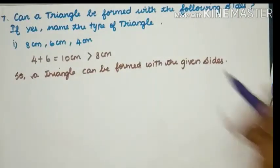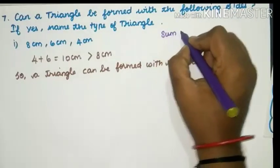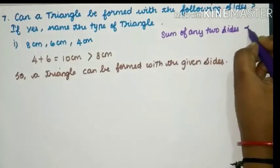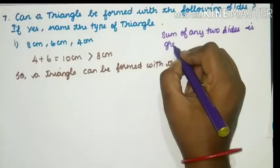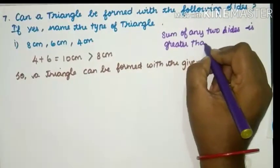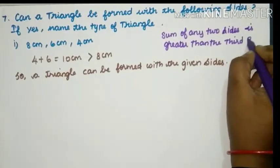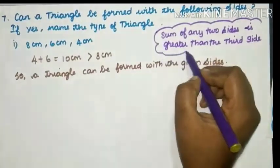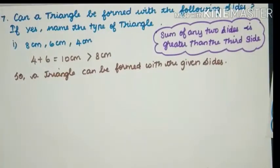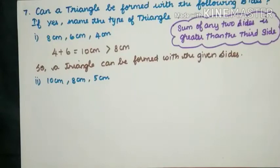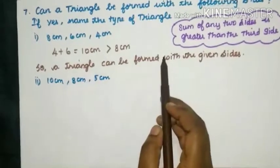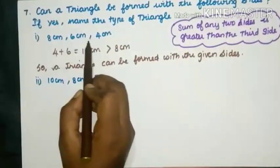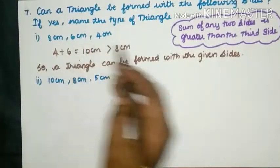Students, always keep in mind: the sum of any two sides must be greater than the third side. Here all three sides are different in length, so it is a Scalene triangle.